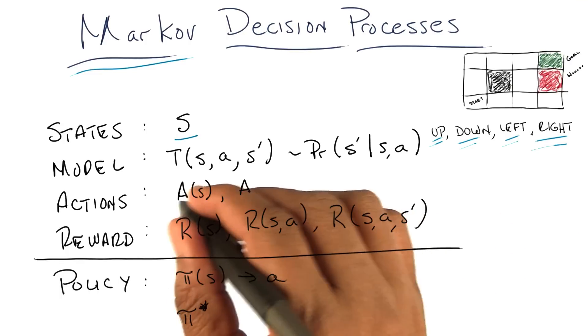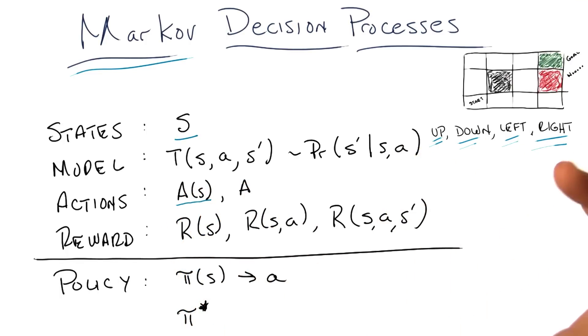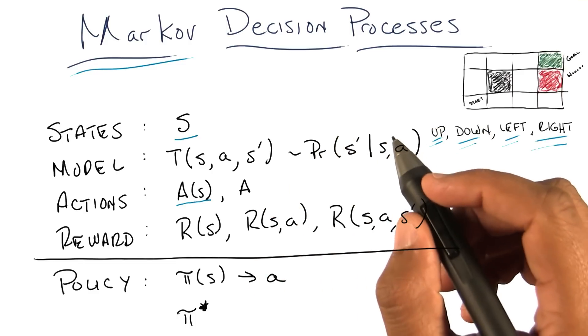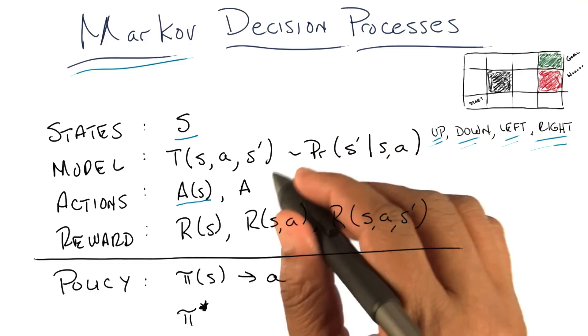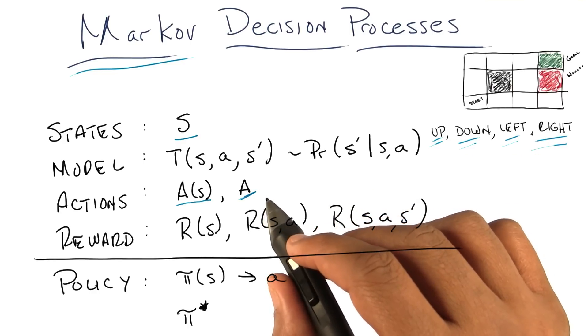Now, in its full generalized form, we tend to think of the set of actions that one can take as being a function of state. Because there's some states you can do some things, and some states you can't do those things. But most of the time, people just treat it as a set of actions. And the actions that aren't allowable in a particular state simply have no effect.